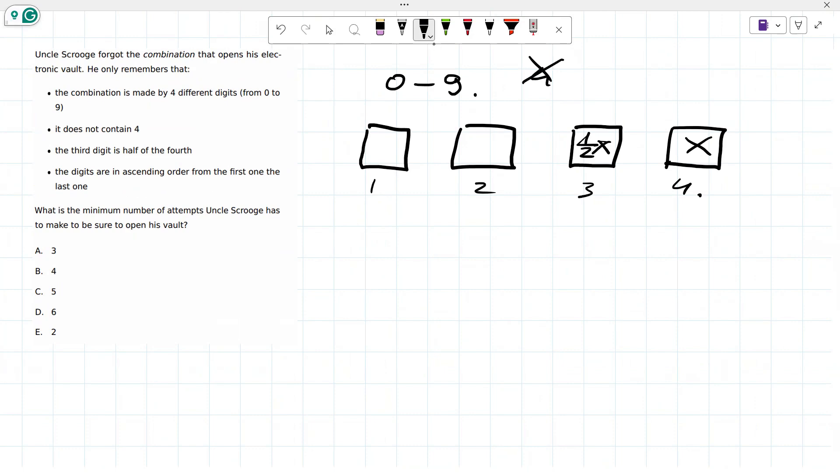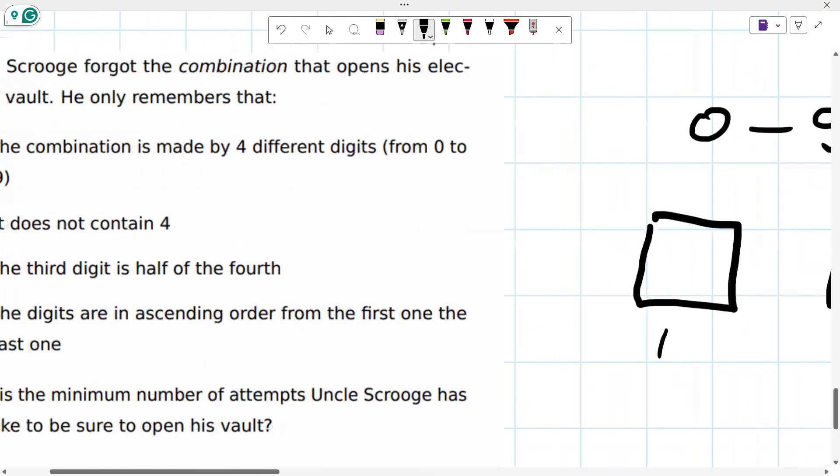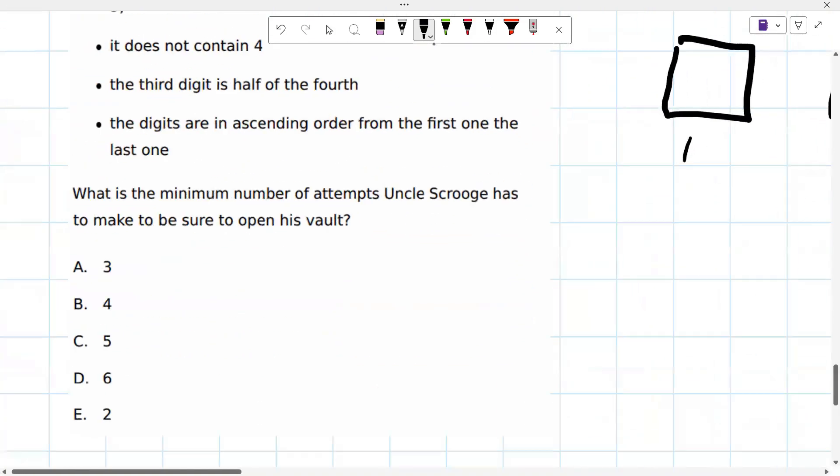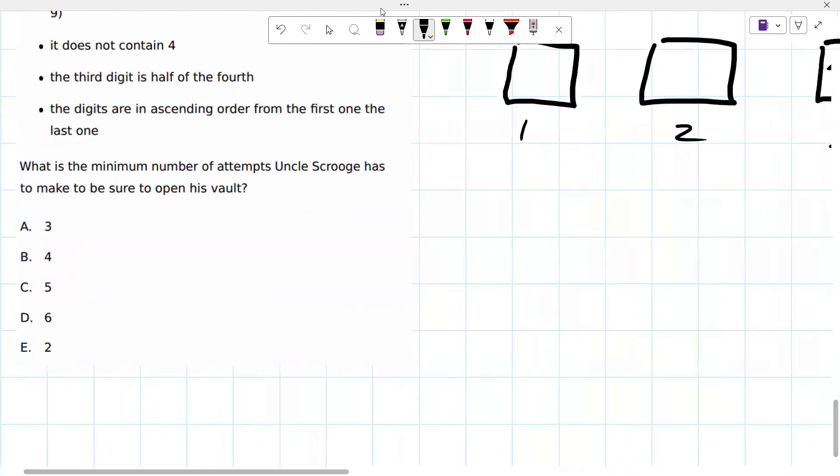And with all of this information, there is one more point. It says that the digits are in ascending order from the first one to the last one. Okay, ascending order means, let's say for example, you have numbers one, zero, two, ten and so on, so they are increasing in ascending order.